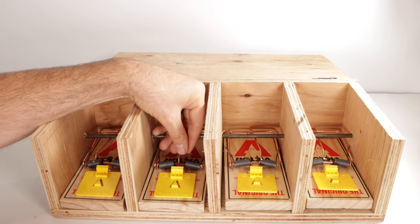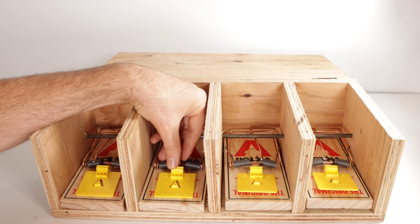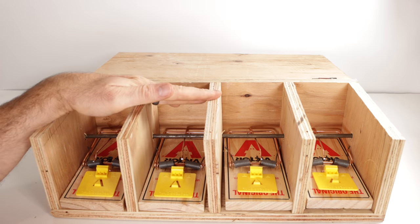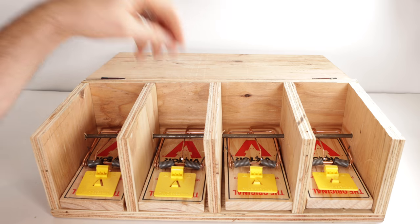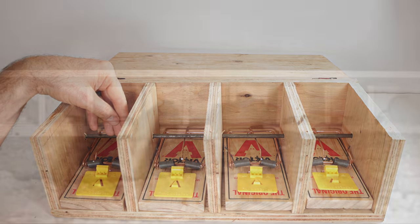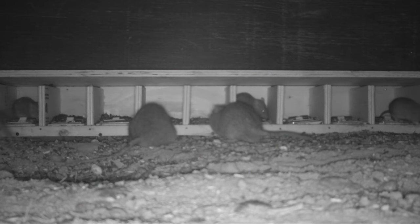Now, if you build one of these systems and you're not catching rats, but you know the rats are around, you might try another trick. And that is place this system with the traps unset. Completely fill each compartment with sunflower seeds and wait until you see that those seeds are gone. Now, I tried this trick with a huge rat infestation and I was amazed how well it worked.